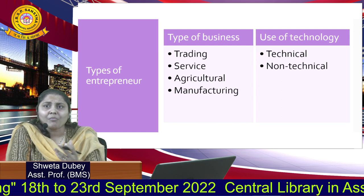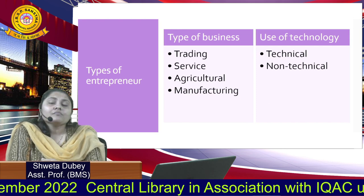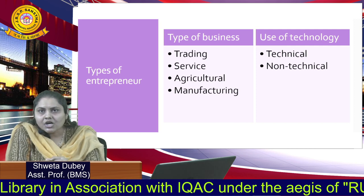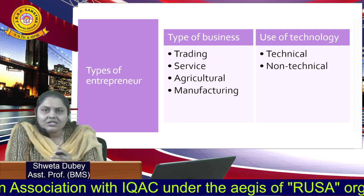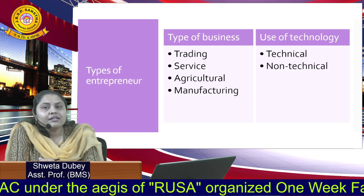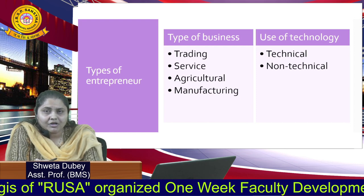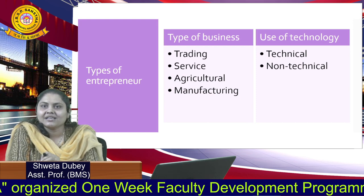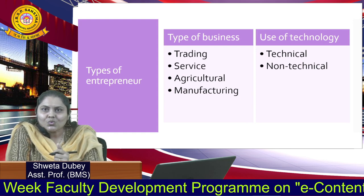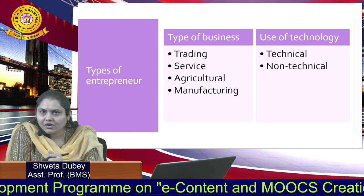The second type is a service entrepreneur — one who deals with the service industry. For example, if you have a hotel, you are a service entrepreneur; if you have a law firm, you are a service entrepreneur. The third type is an agricultural entrepreneur — someone who is dealing with all the processes required in agriculture. For example, if you are a supplier of fertilizers, such a person can be said to be an agricultural entrepreneur, and such people are called agri-preneurs.